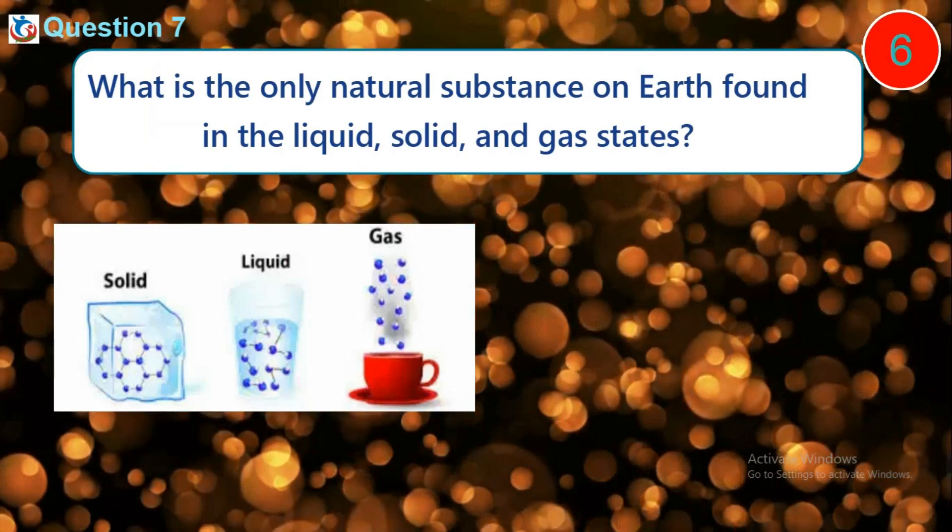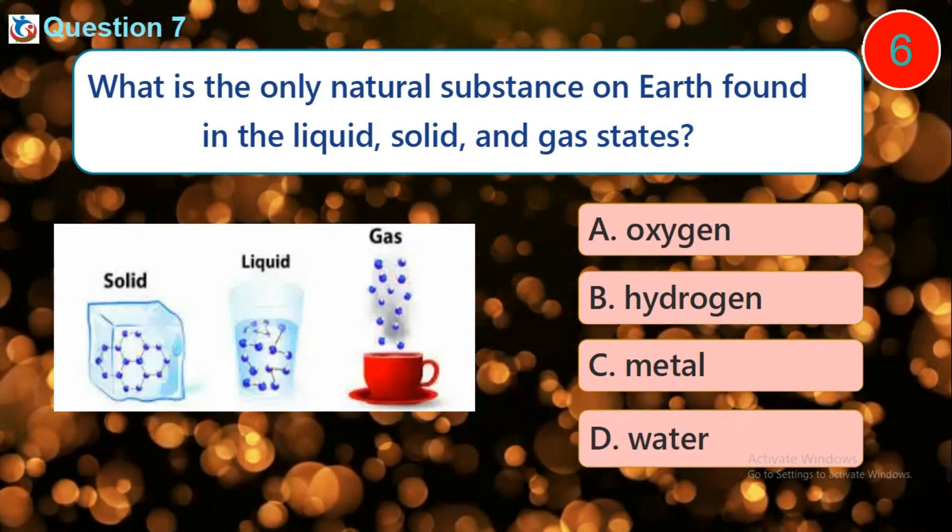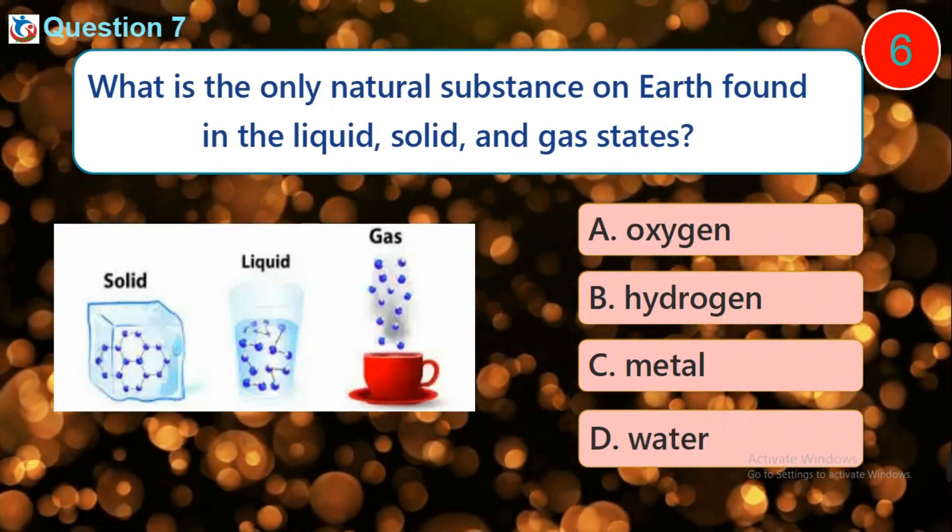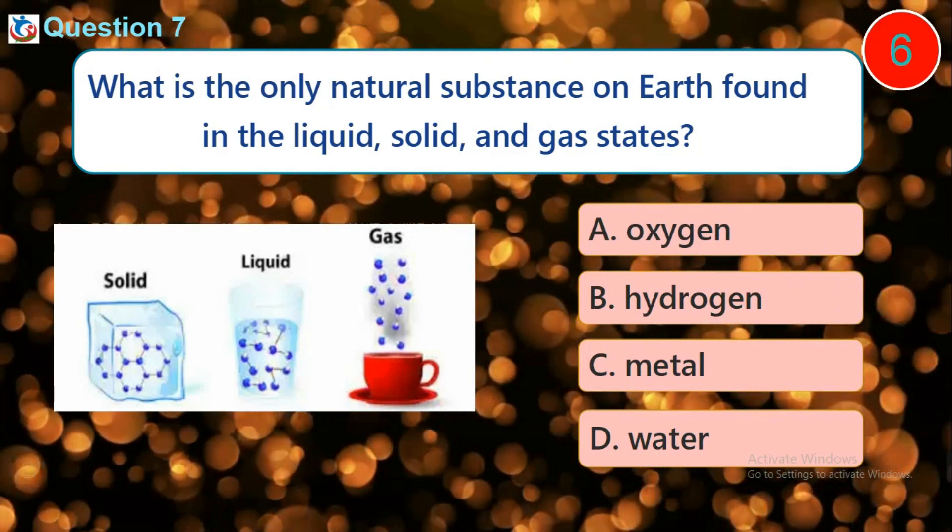Question 7. What is the only natural substance on earth found in the liquid, solid, and gas states? A. Oxygen B. Hydrogen C. Metal D. Water